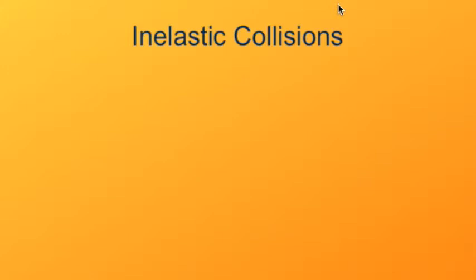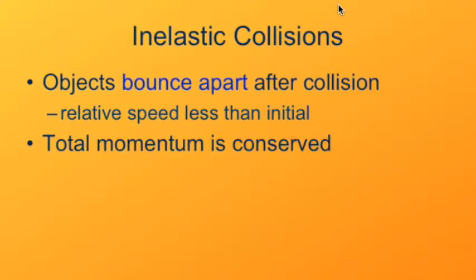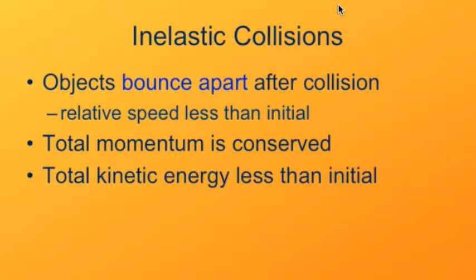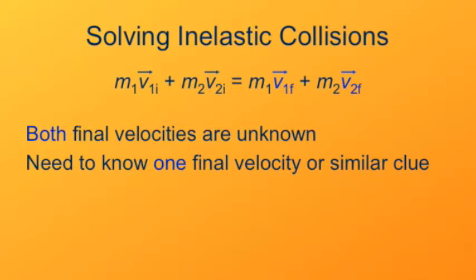Next we look at inelastic collisions that are not totally inelastic. In these collisions, the objects do not move together after the interaction — they bounce apart somewhat. However, their relative speeds will be a little less than initially. Total momentum is still conserved, and total kinetic energy is less than the initial kinetic energy but more than in a totally inelastic collision. Solving these partially inelastic collisions is more complex since the final velocities aren't the same, giving us more unknowns requiring more equations — we need to know one of the final velocities or the direction of one of the final velocities.